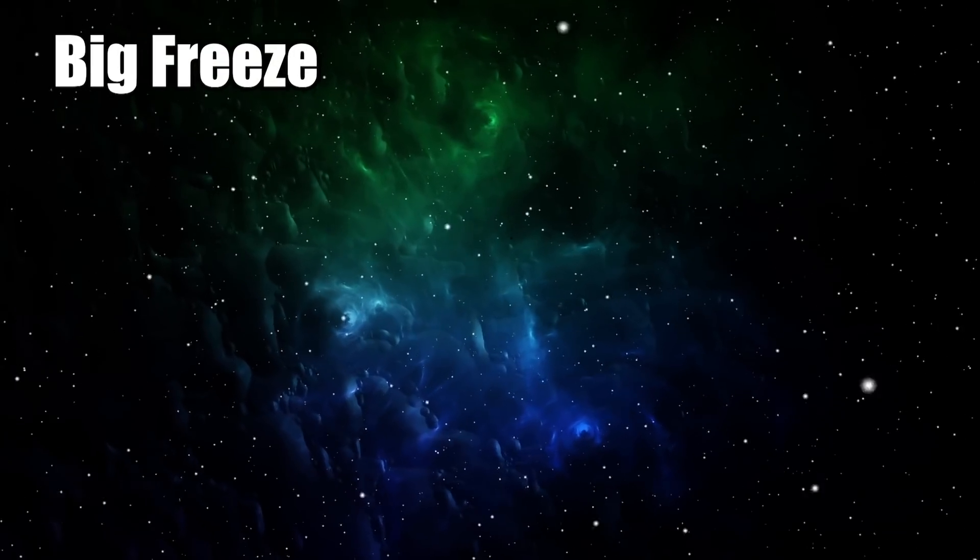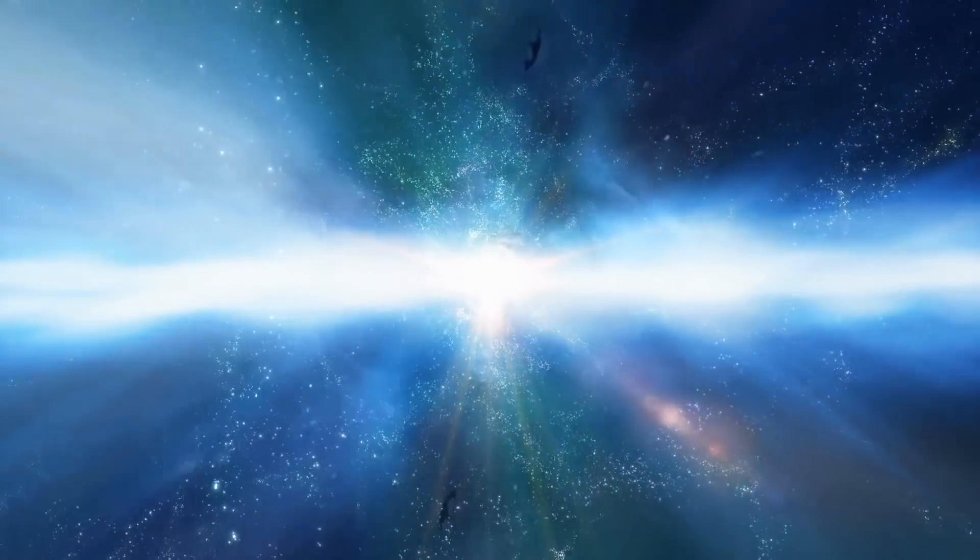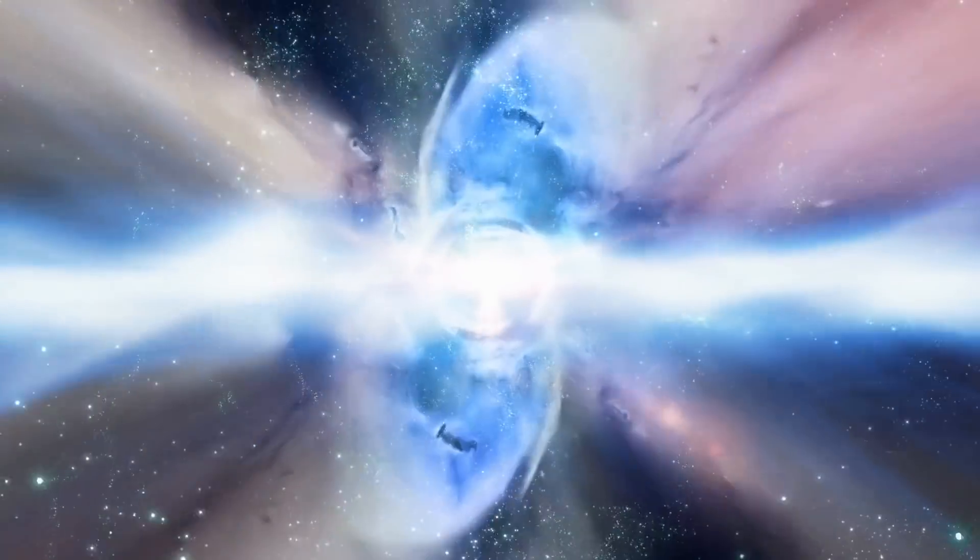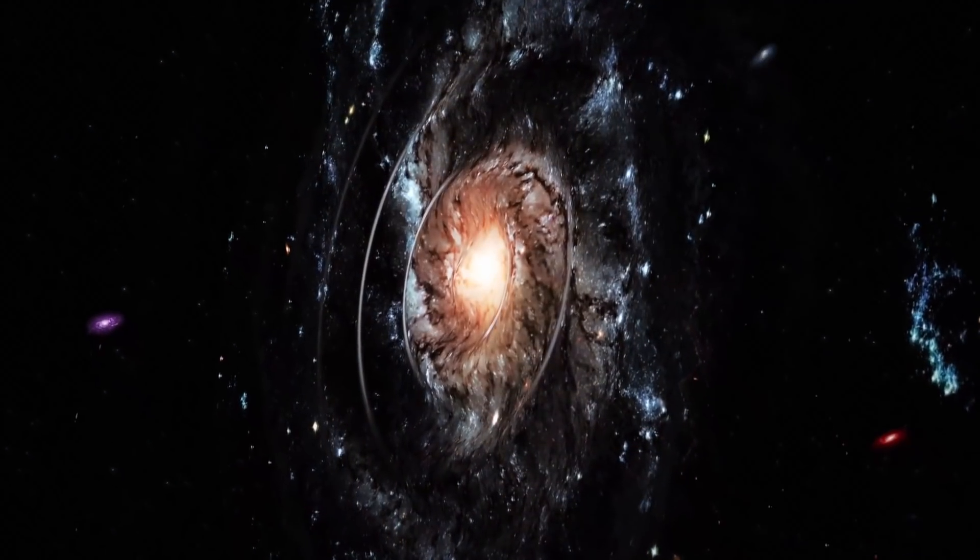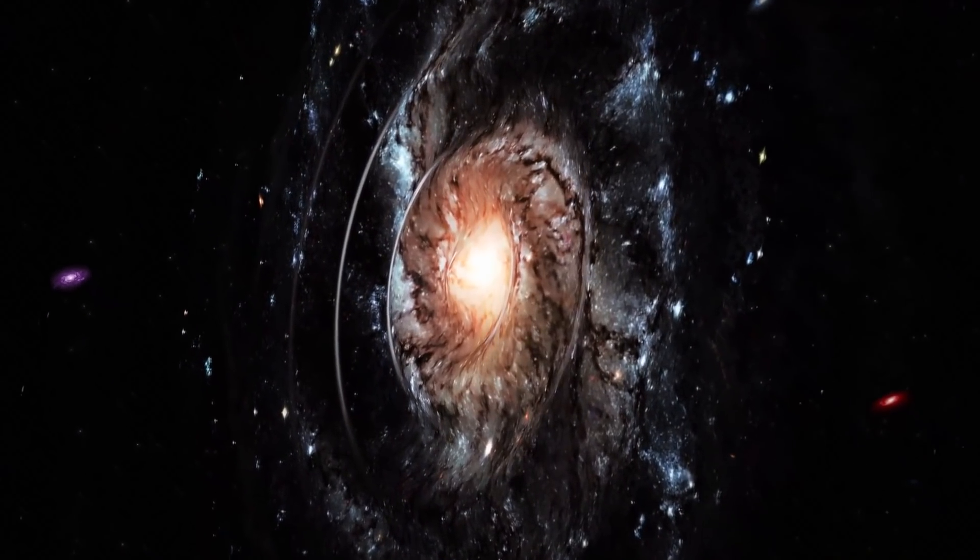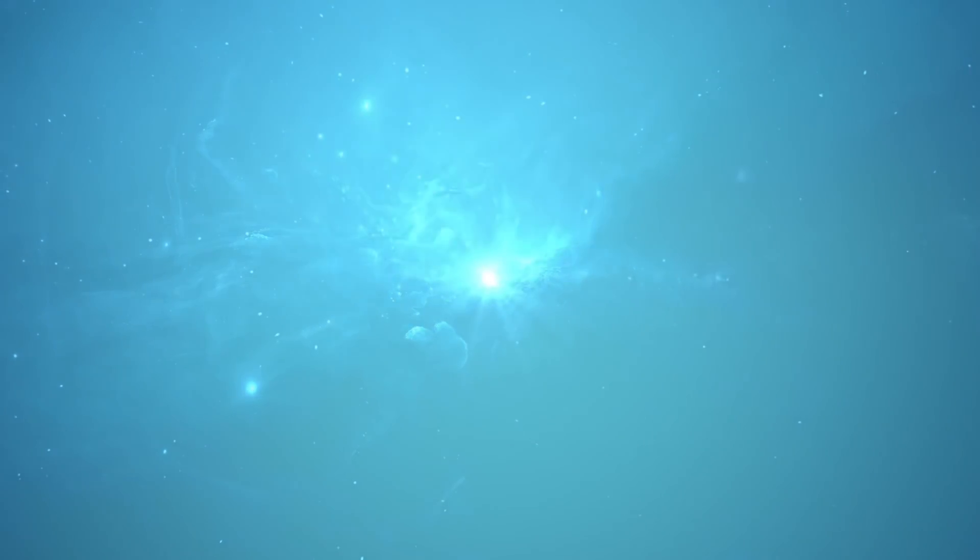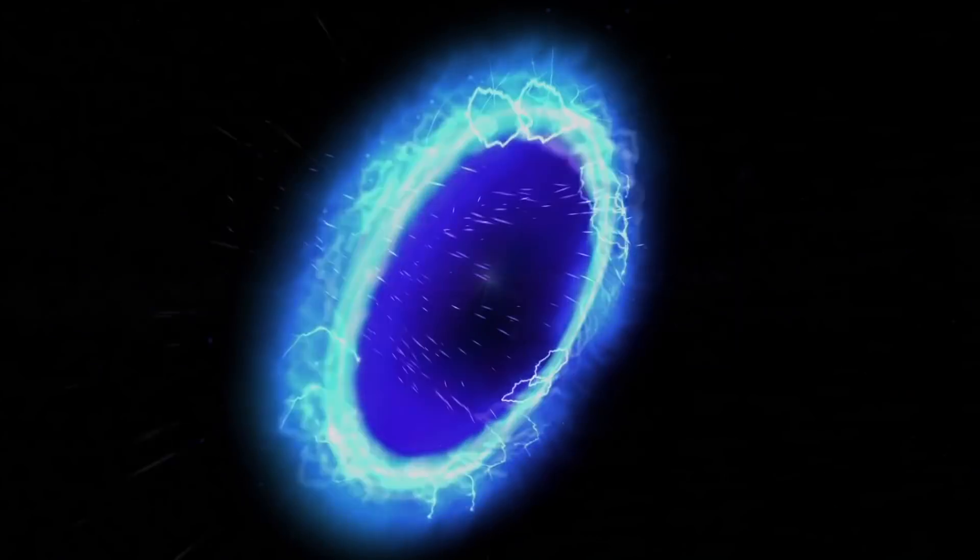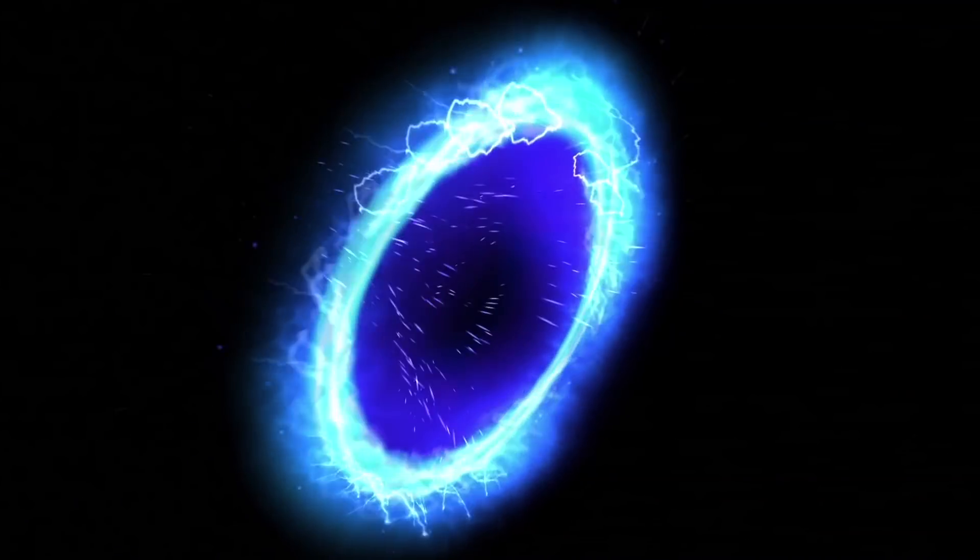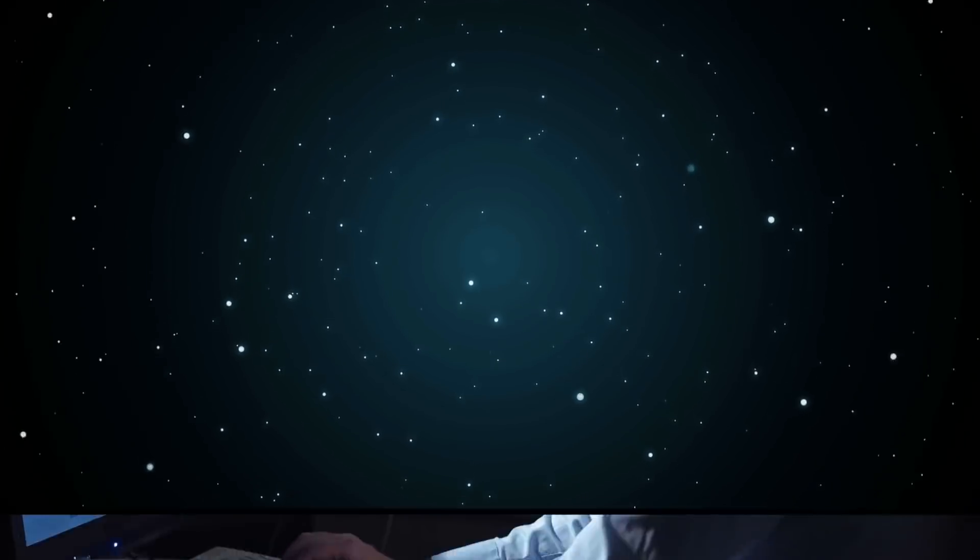A more recent theory, called the Big Freeze, proposes that the universe will continue to drift apart like it is now, until galaxies and stars stop forming. All the stars will die, and the night sky will go completely dark, as black holes devour everything around them. When all is said and done, no traces of heat will exist.